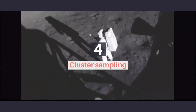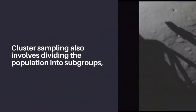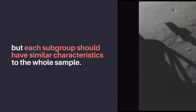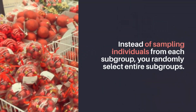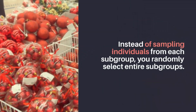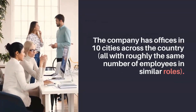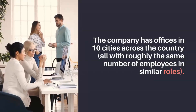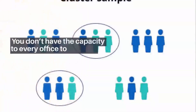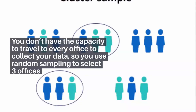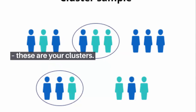4. Cluster sampling also involves dividing the population into subgroups, but each subgroup should have similar characteristics to the whole sample. Instead of sampling individuals from each subgroup, you randomly select entire subgroups. For example, the company has offices in 10 cities across the country, all with roughly the same number of employees in similar roles. You don't have the capacity to travel to every office to collect your data, so you use random sampling to select three offices — these are your clusters.